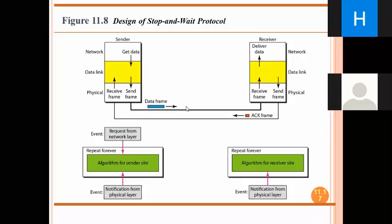Still, one important point here is that we introduced the concept of acknowledgement, giving us a reliable connection. If one frame is sent, we are now able to know it was successfully received by the receiver through this positive acknowledgement feedback — that is an acknowledgement frame, a feedback from the receiver. So reliability is introduced in this manner.